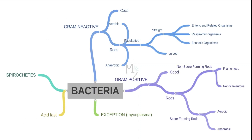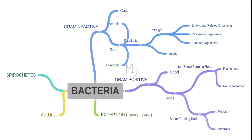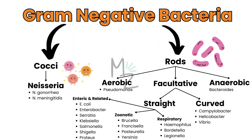Let's start with the bacterial classification. Bacteria are further classified into spirochetes, and also classified on the basis of acid-fast staining into acid-fast bacteria — with an exception, the mycoplasma bacteria. Bacteria are also classified based on gram staining into gram positive — we're done with all of them, be sure to check out the channel — and also into gram negative. Gram negatives are further subdivided into cocci like Neisseria, including Neisseria gonorrhoeae and Neisseria meningitidis, and also into rods.